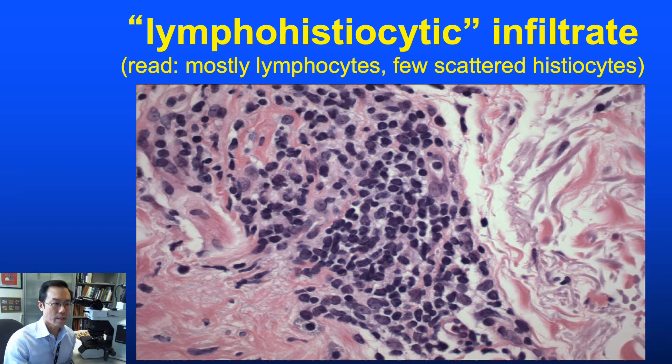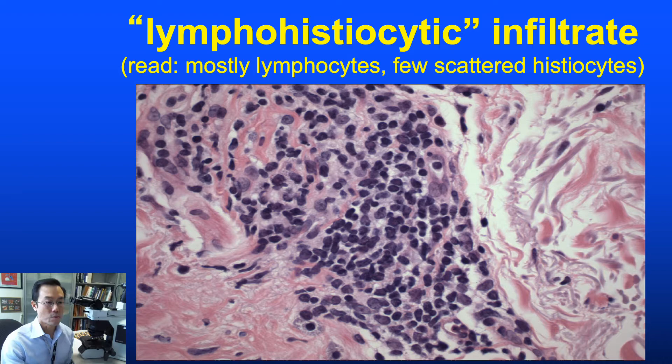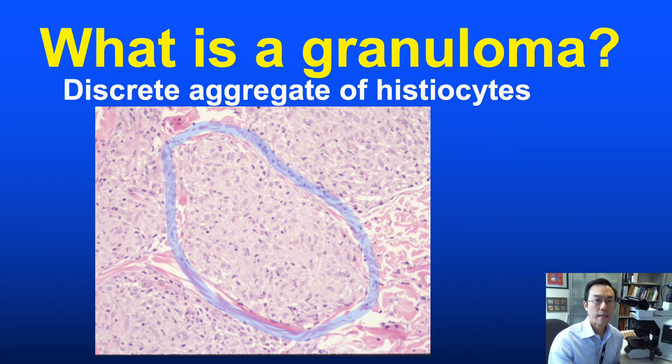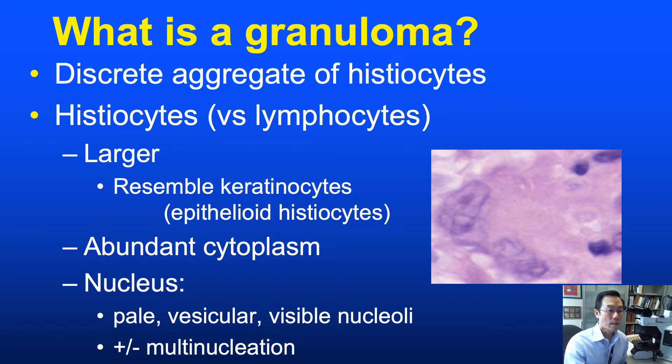Dermatopathologists often use the phrase 'lymphohistiocytic infiltrate' to describe nonspecific inflammation in the skin. By lymphohistiocytic, we usually mean mostly lymphocytes, as expected, but also acknowledging that a small number of inflammatory cells are larger mononuclear cells — presumably histiocytes or macrophages localized to the tissue. So what then is a granuloma? In four words or less, it can be defined as a discrete aggregate of histiocytes.